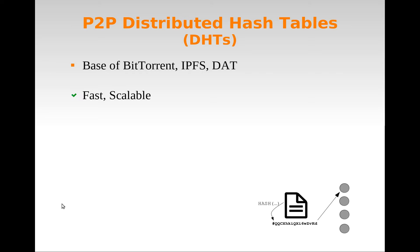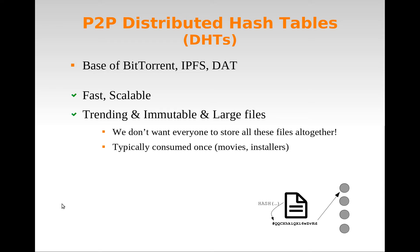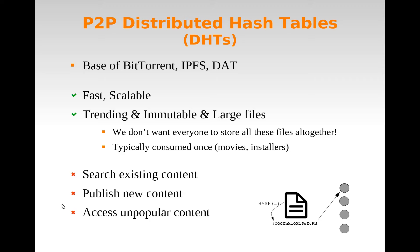DHTs are fast and scalable, and very efficient to disseminate large and popular content, for example movies and software. However, since the identifier has to be known in advance, it's hard to make searches and discover new content. Less popular files may also be hard to download. A big challenge for DHTs is to keep enough incentives to keep peers storing and disseminating their files.